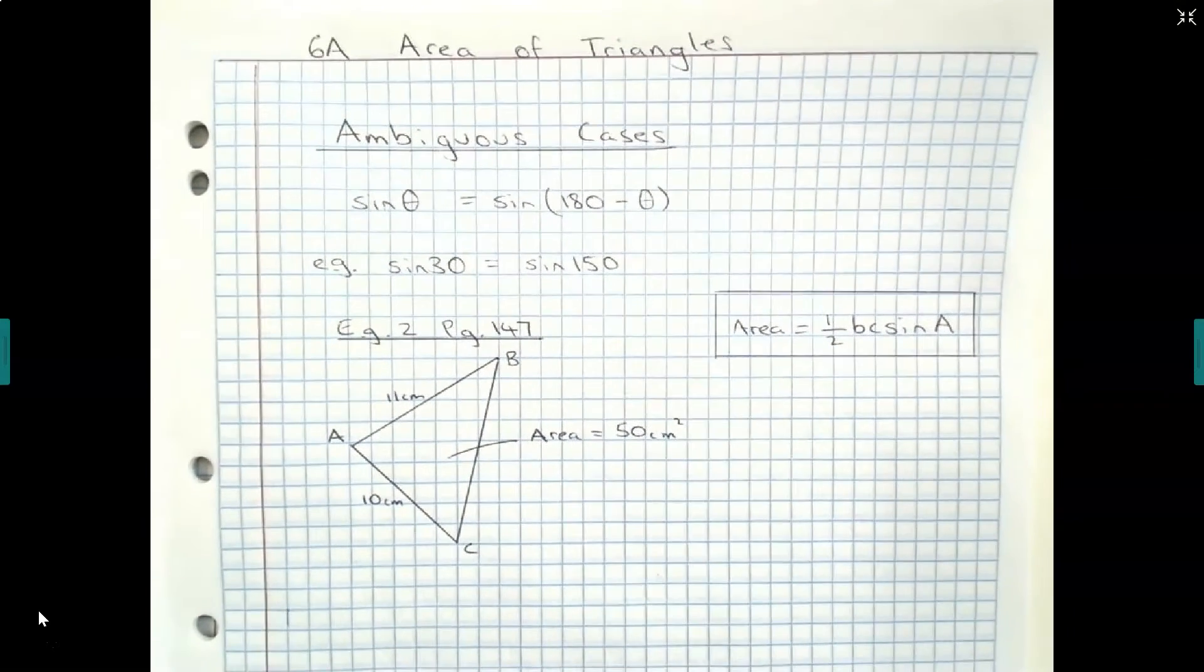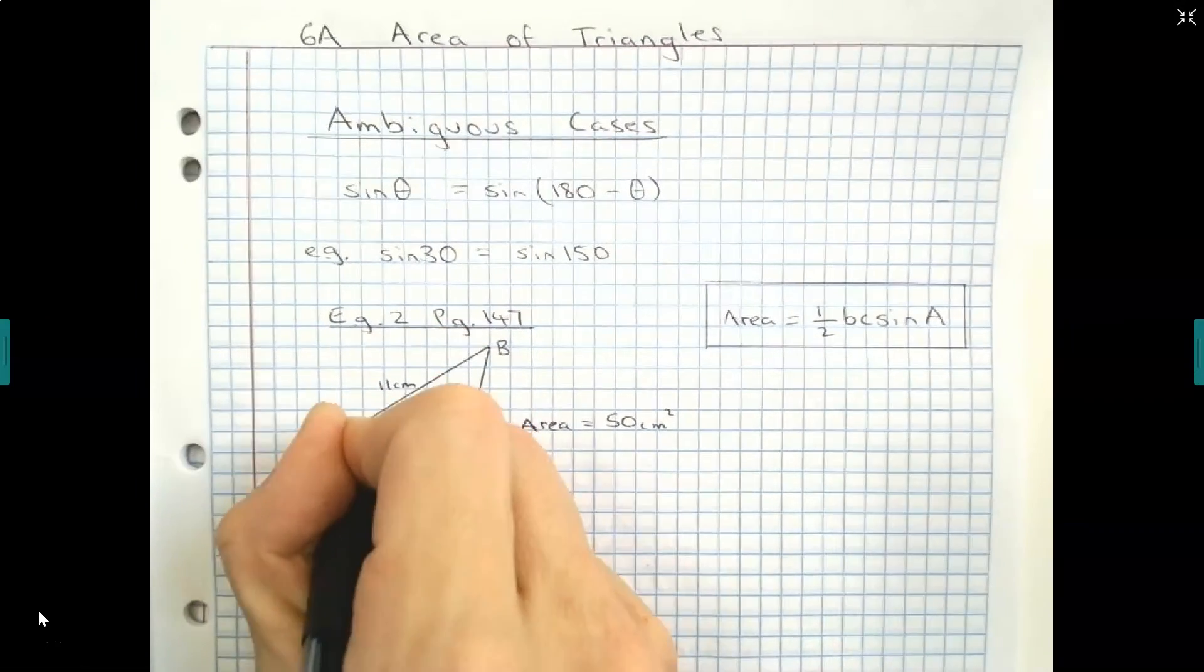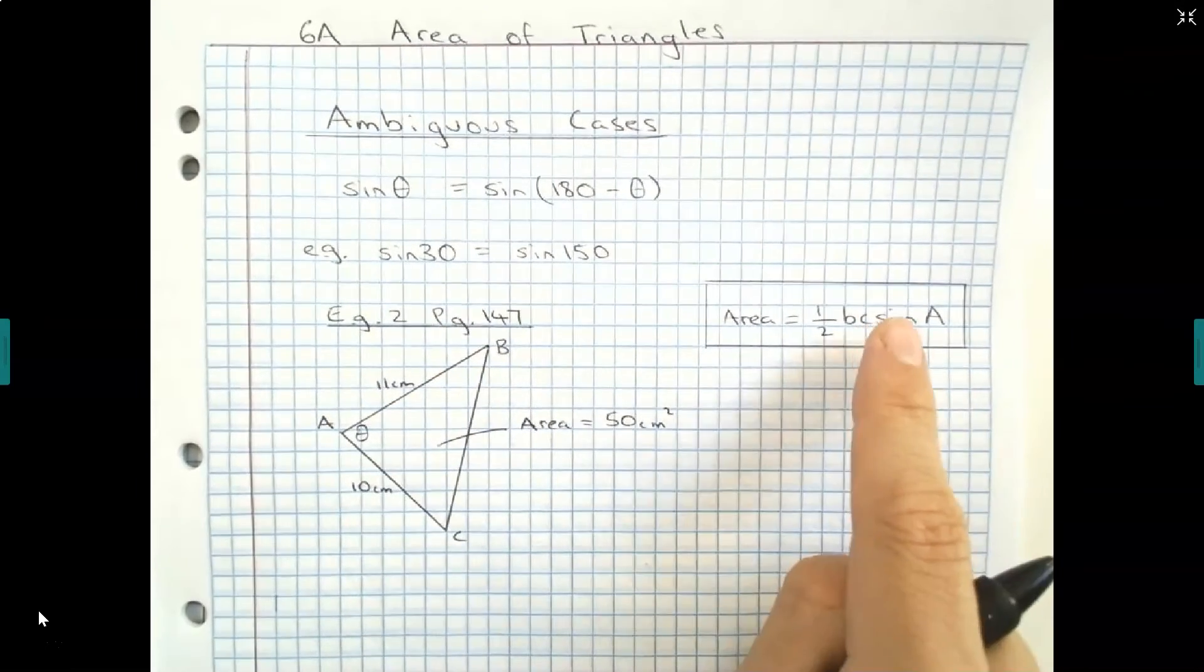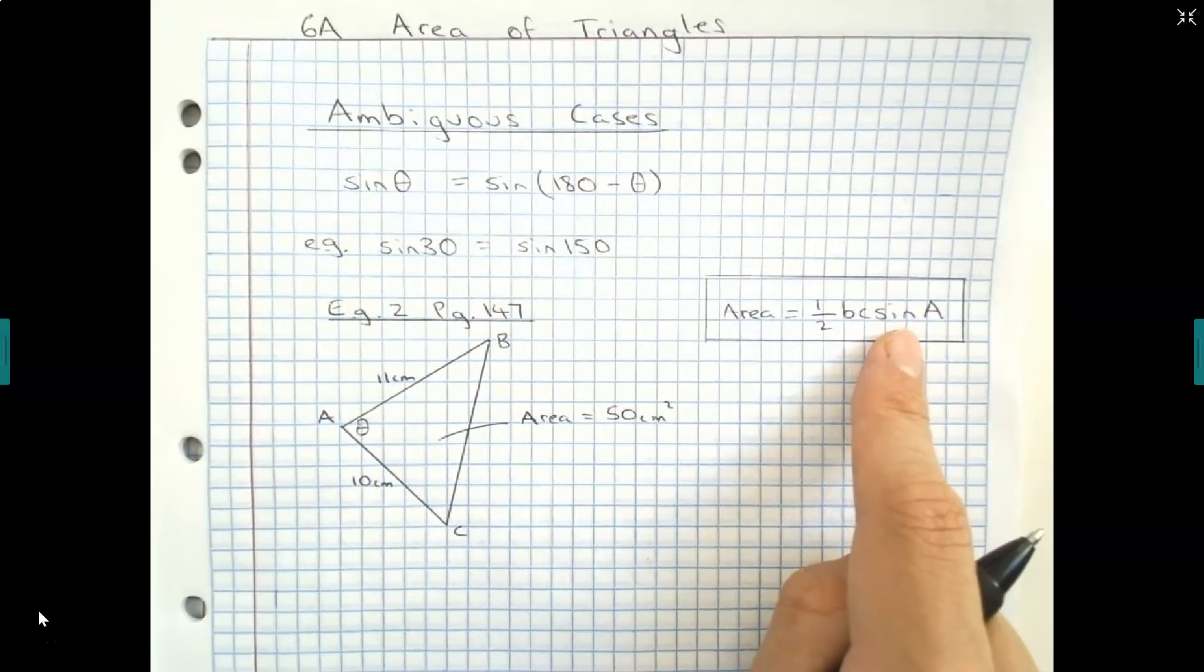Now, if we had to find the angle theta, the included angle, we could apply our formula: area equals half BC sine of A.